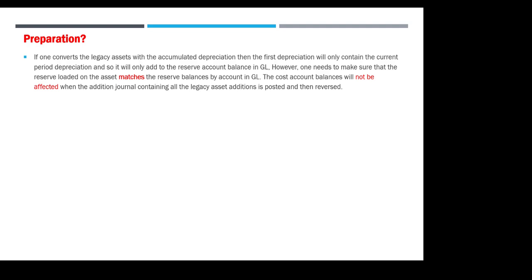The preparation of fixed assets data comes from two systems: either a legacy system, certified system, manual system, archive system, or whatever booking system — converting to Oracle Cloud. When converting, you select system assets with the accumulated depreciation. There is a lot of required data, for example: major category, minor category, date in service, year-to-date depreciation, accumulated depreciation, serial number, tag number, units, expense account, depreciation account, and clearing account.